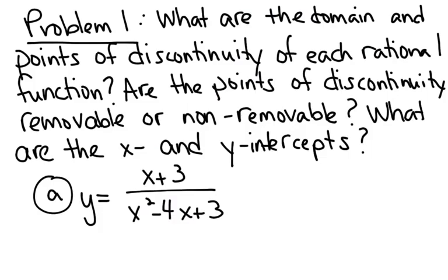In problem one, we're going to look at the domain and points of discontinuity for each rational function. There are actually three types of discontinuity: a point discontinuity, an infinite discontinuity (which is an asymptote), and a jump discontinuity, which occurs when there's a gap in the graph. We'll also determine whether points of discontinuity are removable or non-removable, and find x and y intercepts. To figure out discontinuity, it helps to have both the numerator and denominator in factored form.